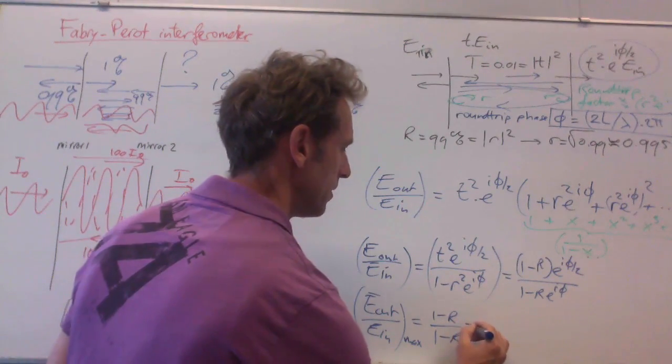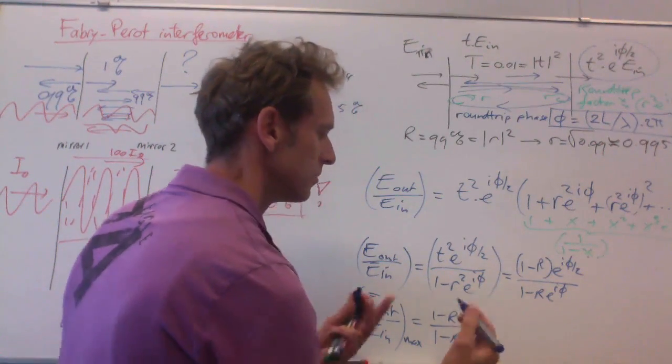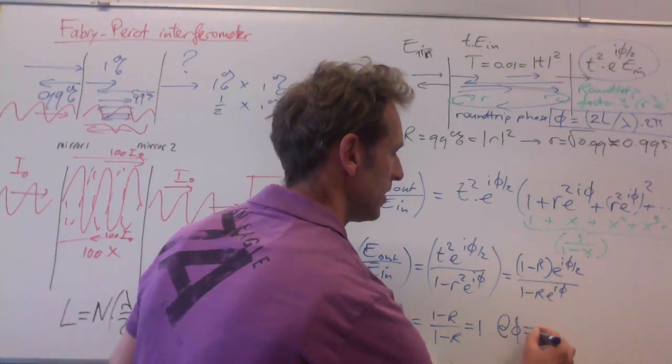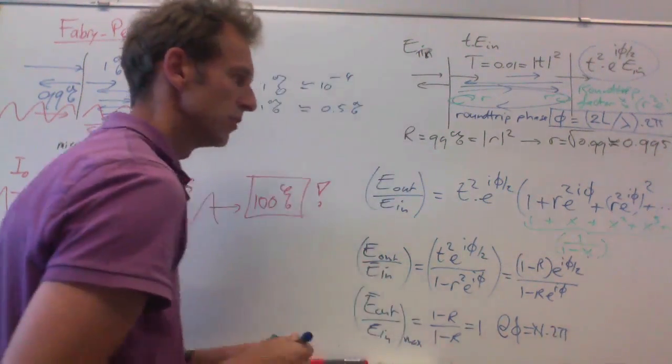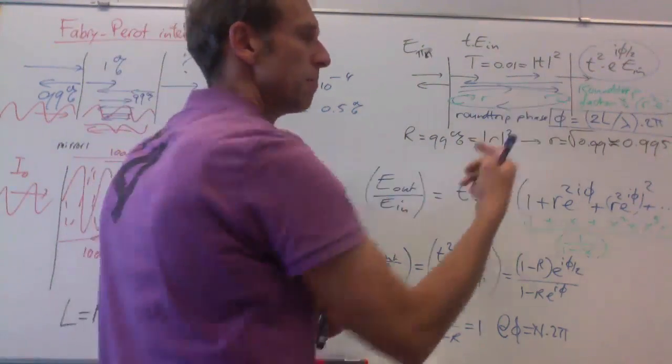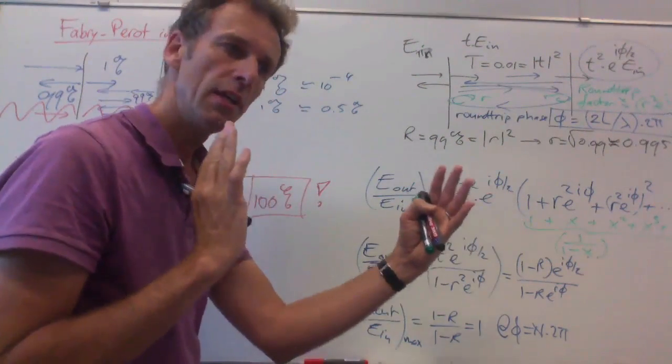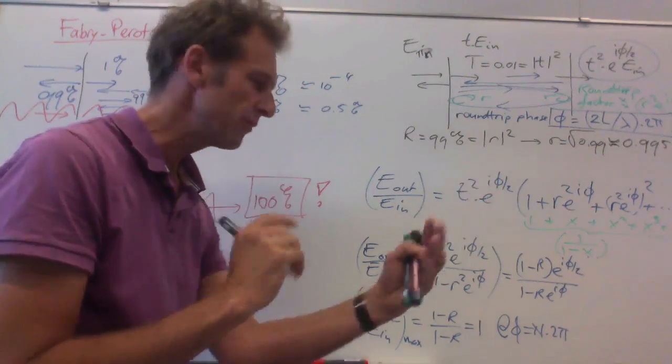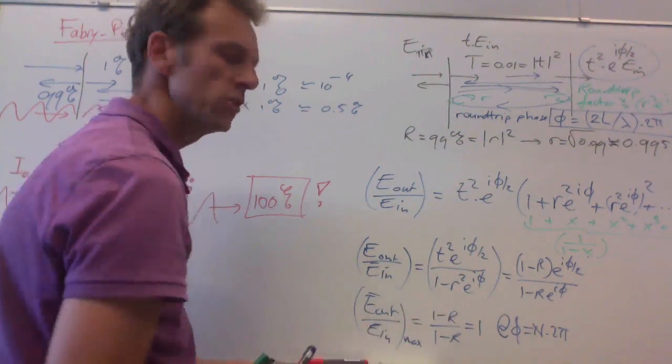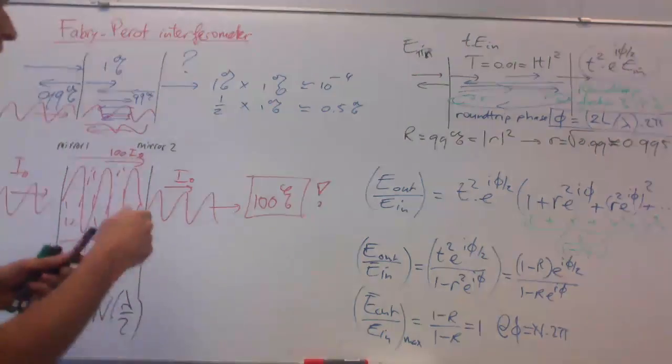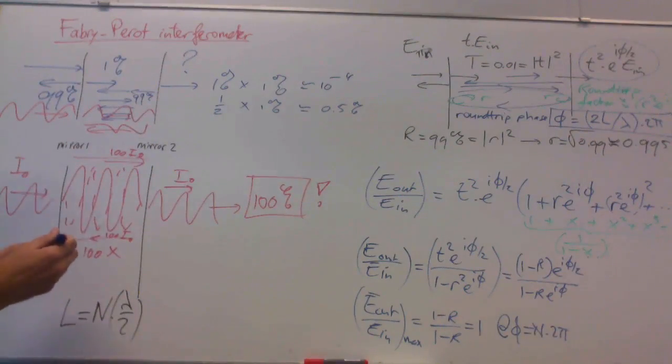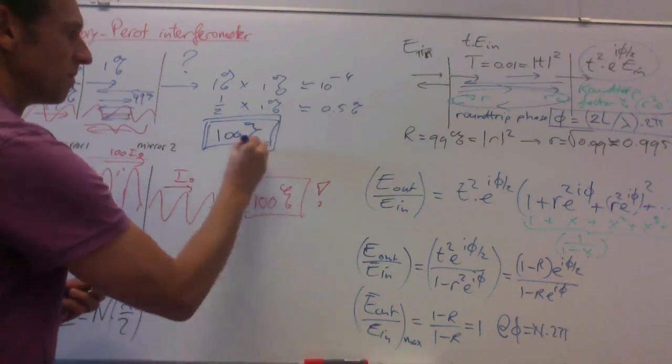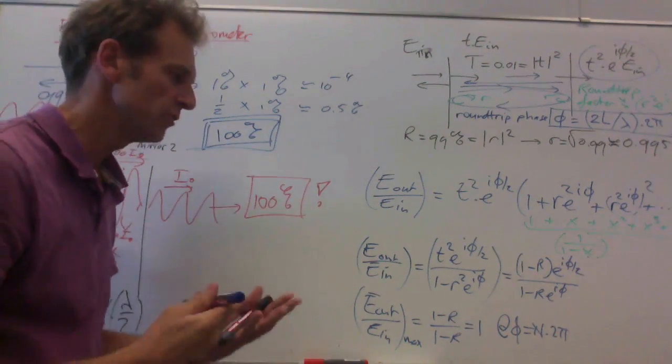And you see that the maximum transmission of this Fabry-Perot cavity that comprises two mirrors is (1 - R) divided by (1 - R) is 1. It's 100% transmission at φ is a multiple of 2π. So if the round trip path is equal to an integer multiple of the wavelength, then the transmission of the system as a whole is indeed 100%. And that's the magic of interference.